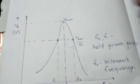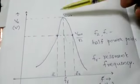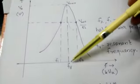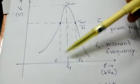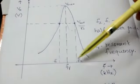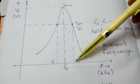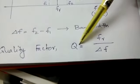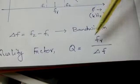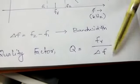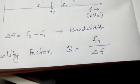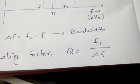From the frequency response curve, we are supposed to find the values of FR, F1, and F2. Using those values, we then find the quality factor Q, which equals FR divided by delta F.